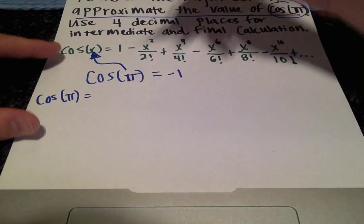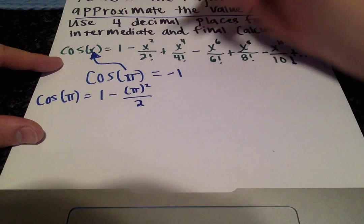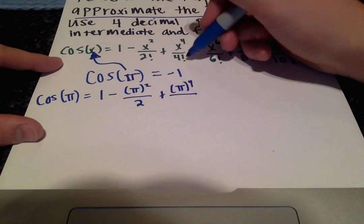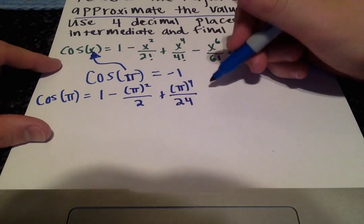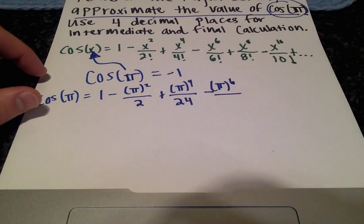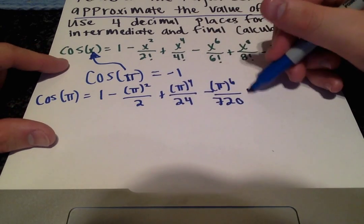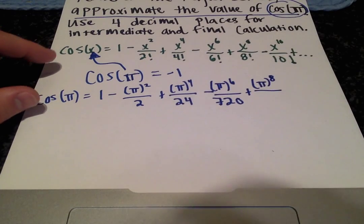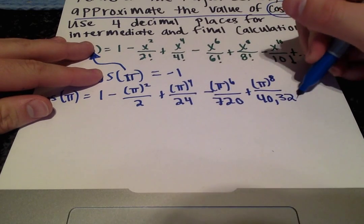Cosine of π equals 1 minus π squared over 2 plus π to the fourth over 24 minus π to the sixth over 720 plus π to the eighth over 40,320.